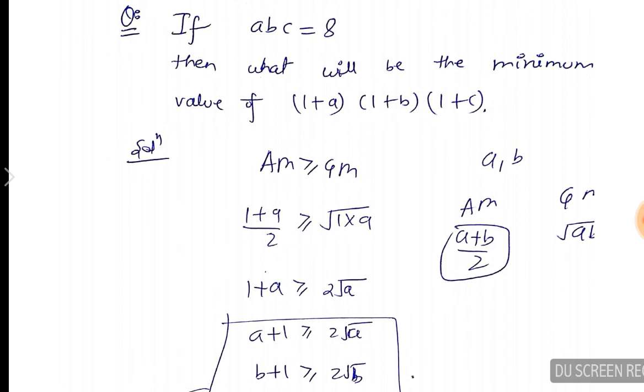So (1+A)/2 is greater than equal to √(1×A). When 2 goes to the other side, it multiplies. So 1+A is greater than equal to 2√A.